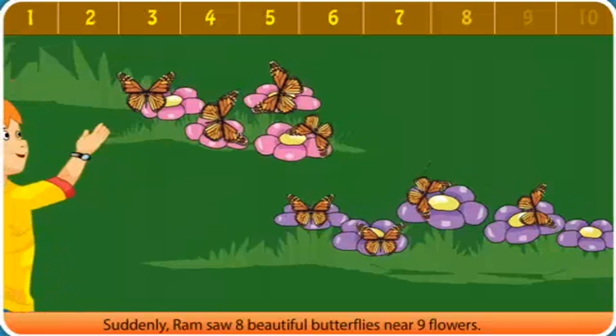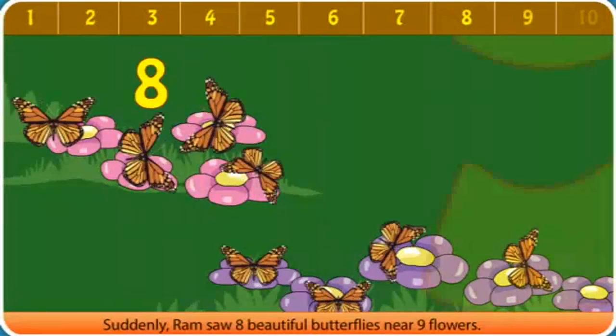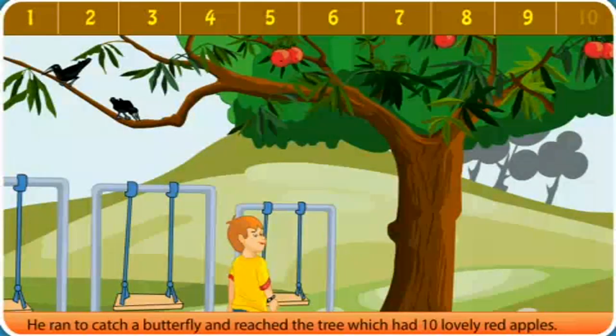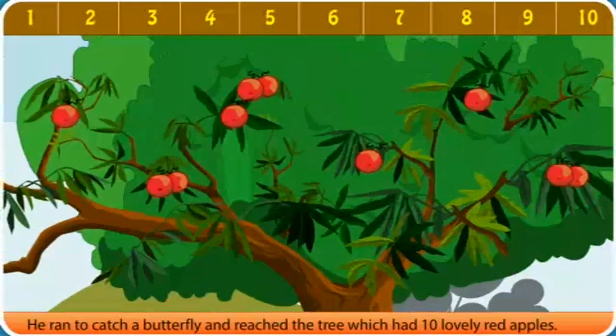Ram saw eight beautiful butterflies near nine flowers. He ran to catch a butterfly and reached the tree which had ten lovely red apples.